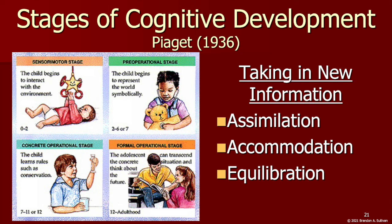The final stage is formal operational, ages twelve and beyond, where thinking becomes more abstract, and the ability to use deductive reasoning — general to specific — is developed, including understanding theoretical reasons behind hypothetical problems such as moral, philosophical, ethical, social, and political challenges, and coming up with and assessing different possible options in their minds. Piaget also noted the different ways we process information. Assimilation is when we take in new information in terms of what is already known — pre-existing knowledge and beliefs. Accommodation is when we adjust, change, or alter what we previously knew in light of new information. And equilibration is a balance between assimilation and accommodation. This is how children move from one stage to the next.